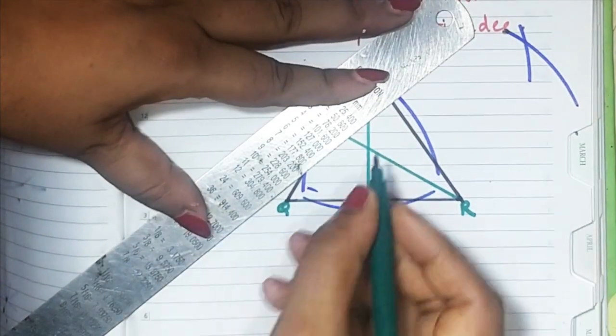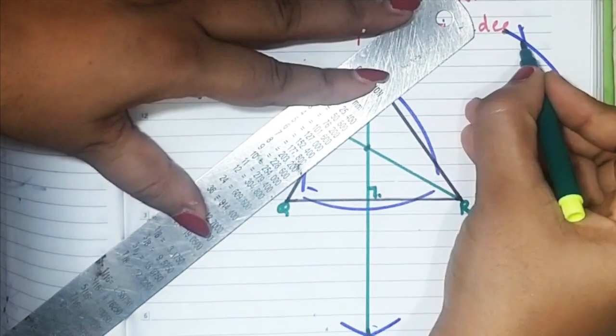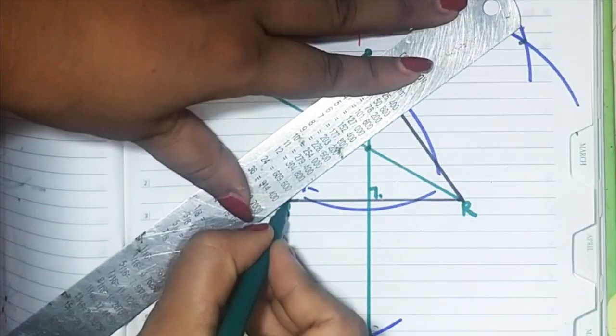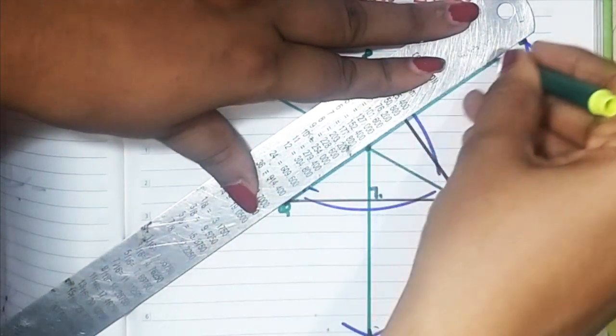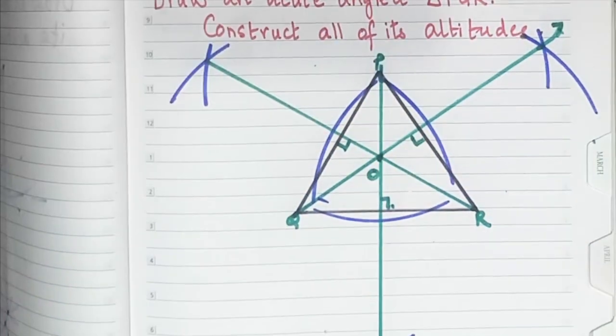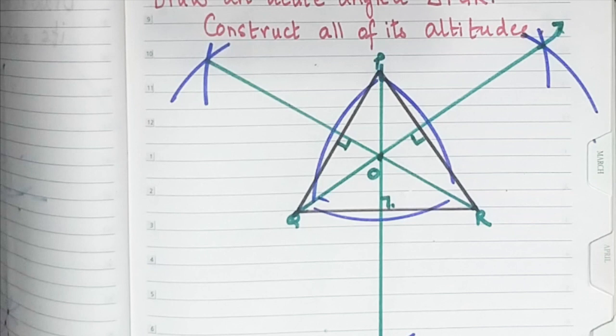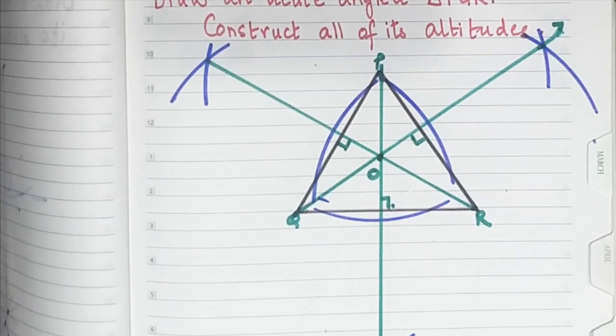Okay, so this P, this center and this, all three have to meet. Center is called the orthocenter and it's denoted by letter O.